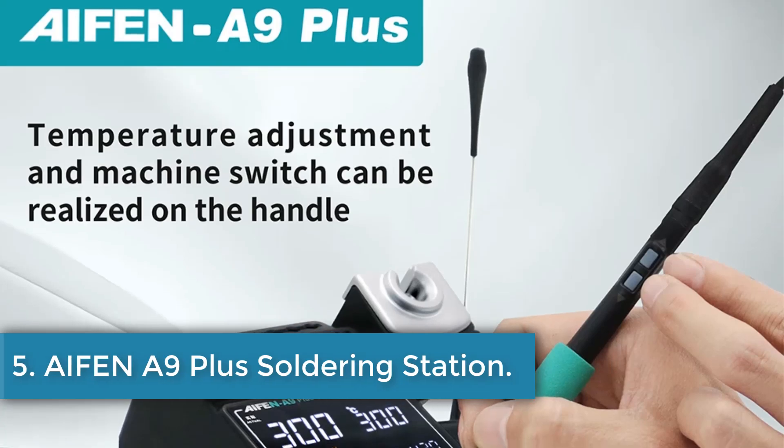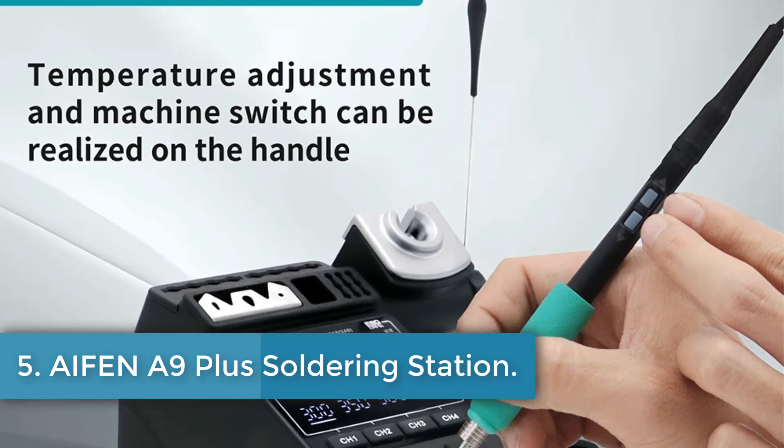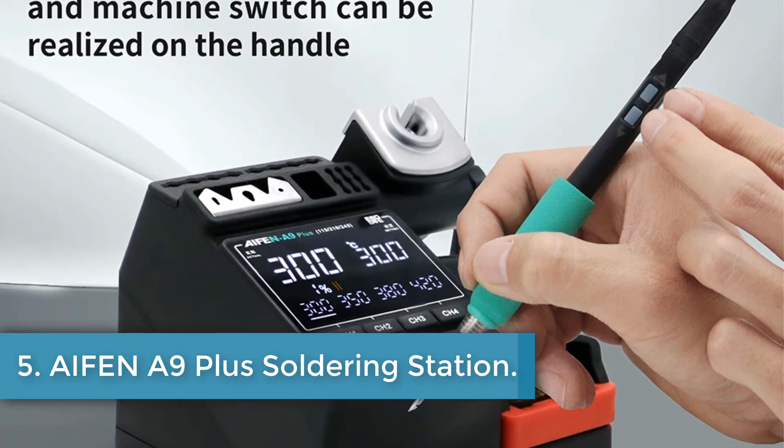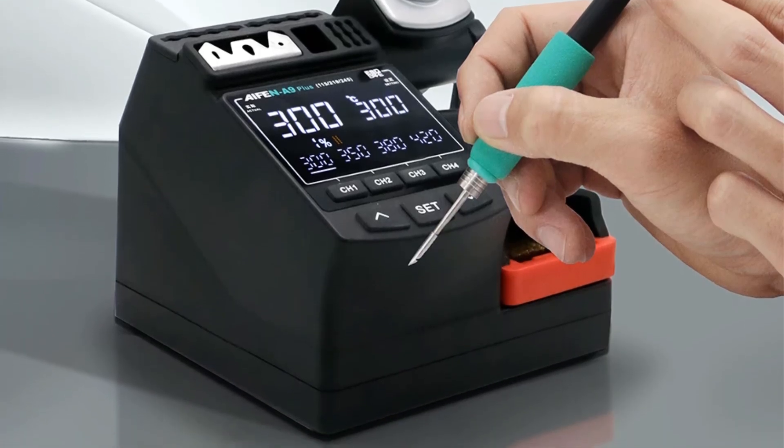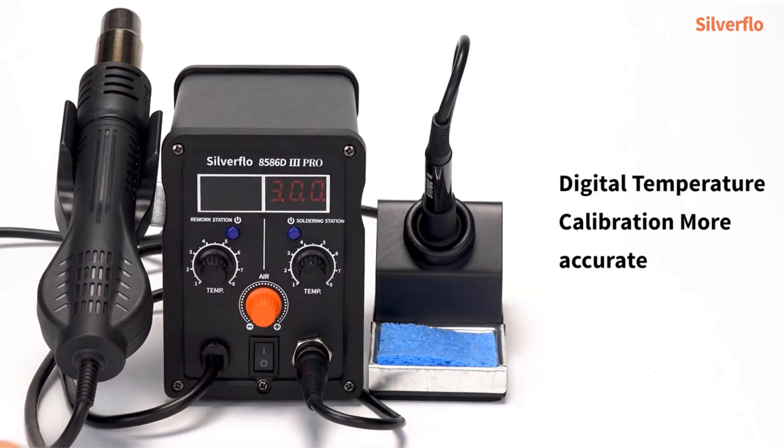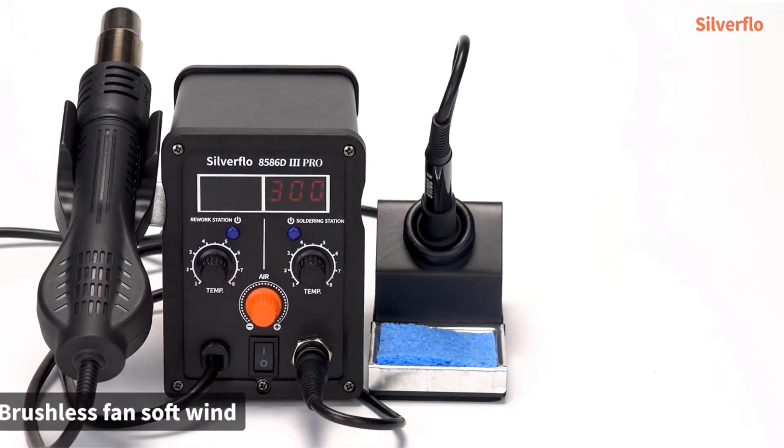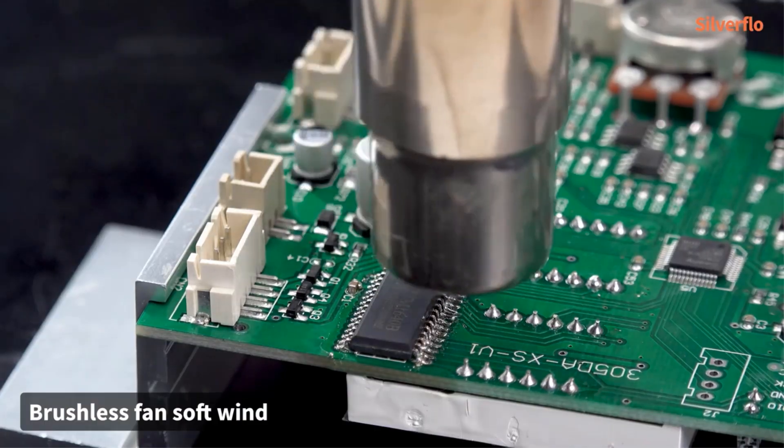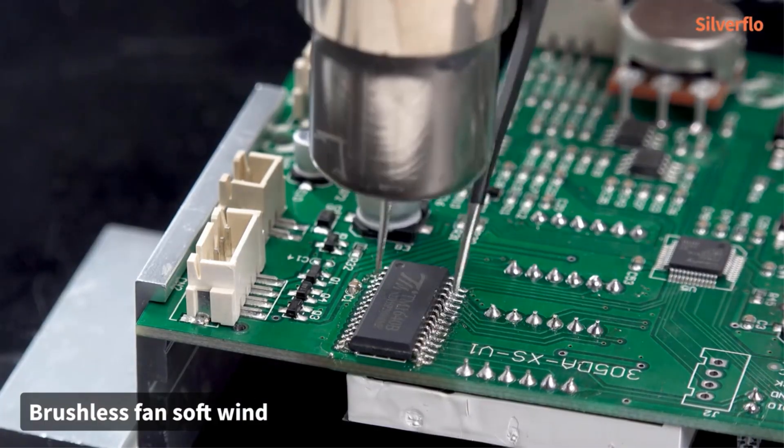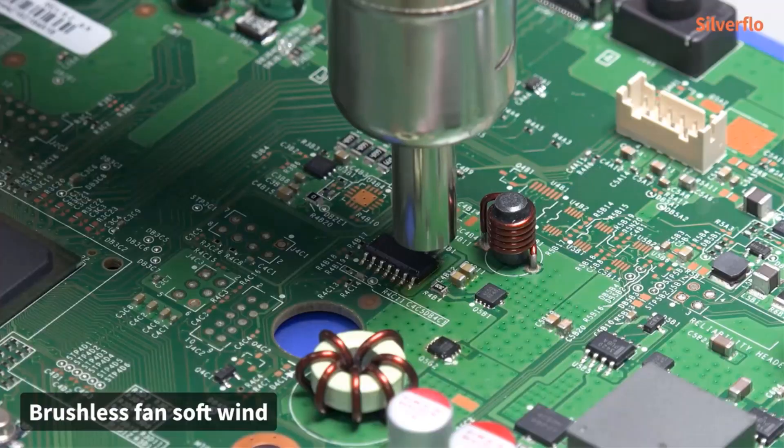Number 5: IPHAN A9 Plus Soldering Station. The IPHAN A9 Plus Soldering Station is a highly versatile and powerful tool designed for precision welding and reworking tasks. It operates at a maximum power of 120W and supports universal input voltages of AC 220V and AC 110V, with a frequency range of 50 to 60 Hz.